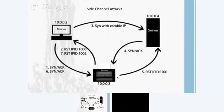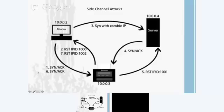Another technique I'll teach, which is part of firewall and IDS/IPS evasion, is called the side channel attack — also known as an idle scan. This is one of my favorites because it allows you to spoof your IP address and scan a node without giving any information out to that server. It utilizes the TCP three-way handshake. The SYN-ACK is the second element. If a host doesn't want to connect, it sends a RST — a reset packet — instead of an ACK, closing the connection.